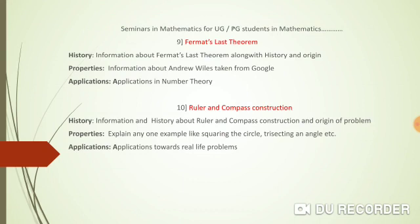The next topic is Fermat's Last Theorem. We know x² + y² = z², and in general, x^n + y^n = z^n — what Fermat stated. You can cover its history and origin, how people searched for proofs for various values of n, and discuss who finally gave the proof — a proof spanning thousands of pages, where Andrew Wiles had been thinking about proving it since the age of eight. You can explain all of this from a seminar point of view, along with applications in number theory.